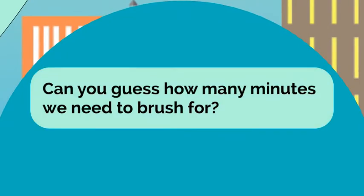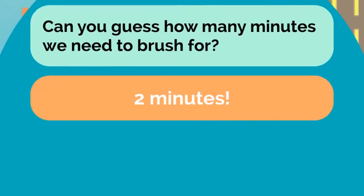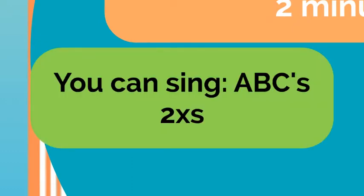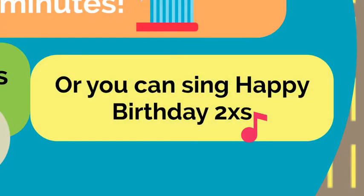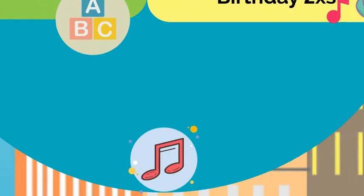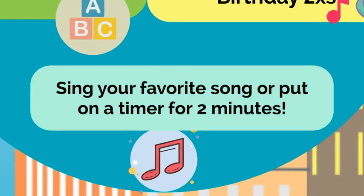Can you guess how many minutes we need to brush for? I'll give you a hint — it's the same amount of times we need to brush our teeth every day. If you said two minutes, you would be correct. Two is the special number for today. We can also keep track of two minutes by singing several songs — you can sing the ABC song nice and slow two times, or the happy birthday song two times, nice and slow. Singing, humming, or playing these songs will be great ways to keep track of two minutes. Or you can sing your favorite song, or just put a timer on for two minutes.